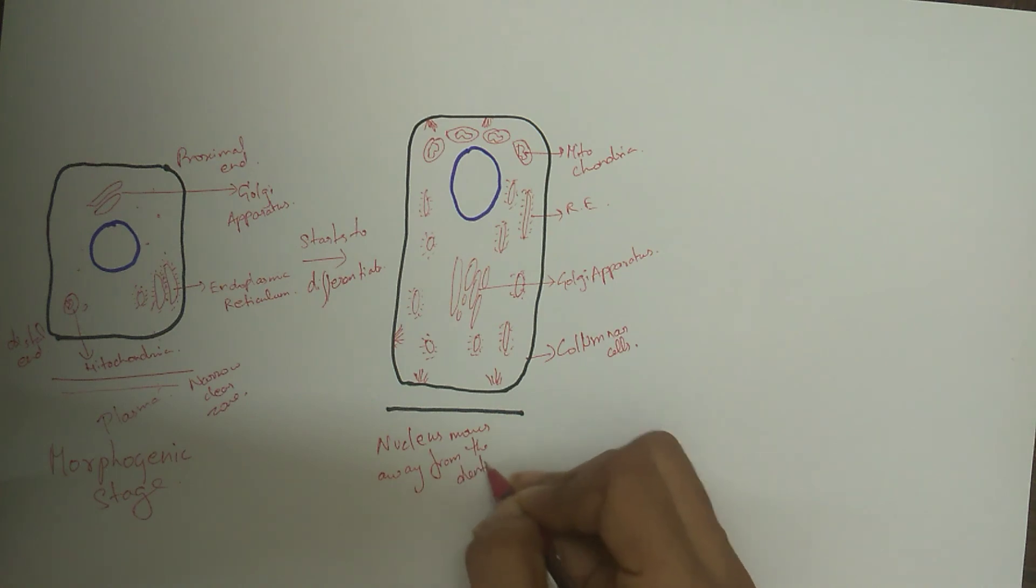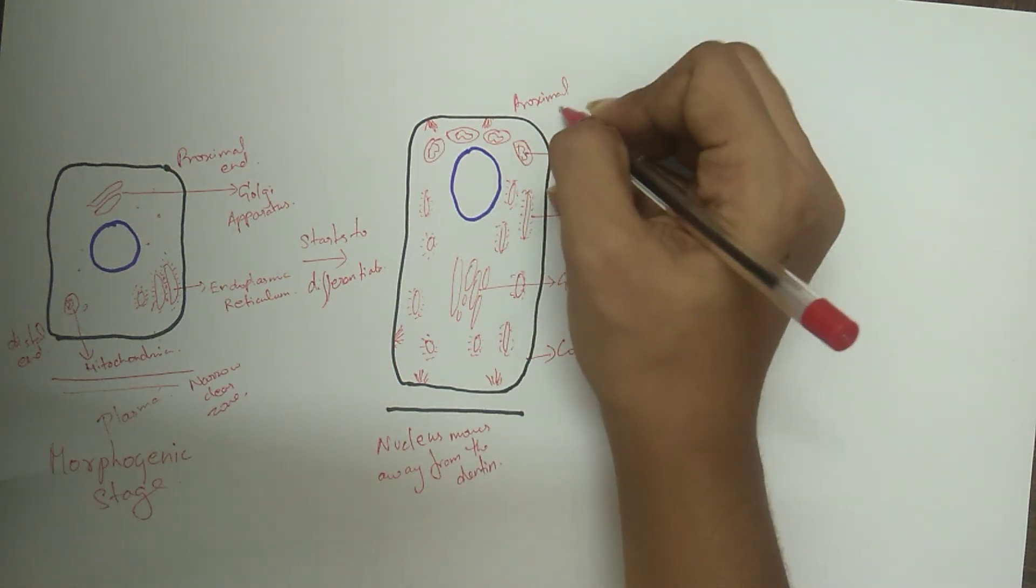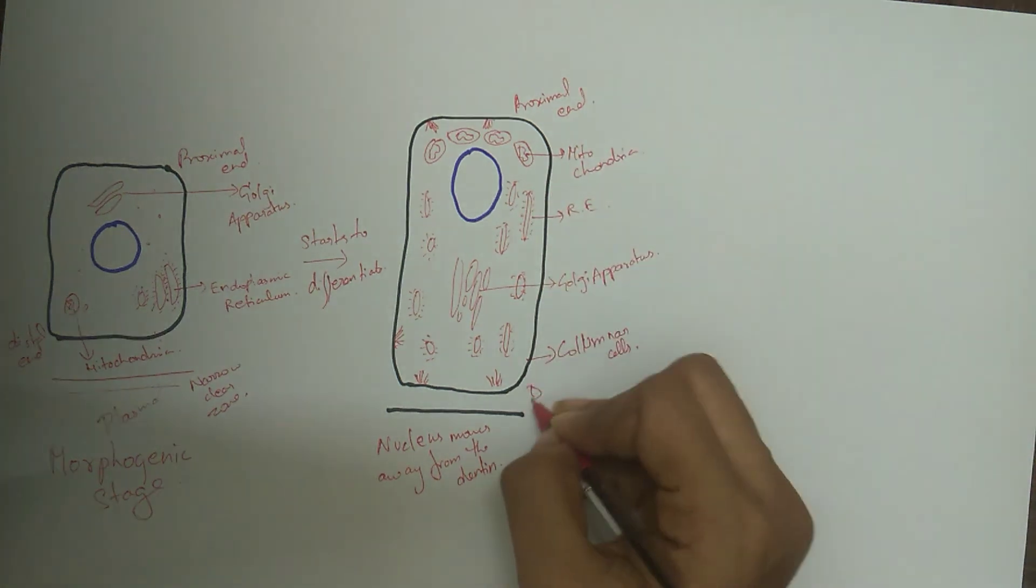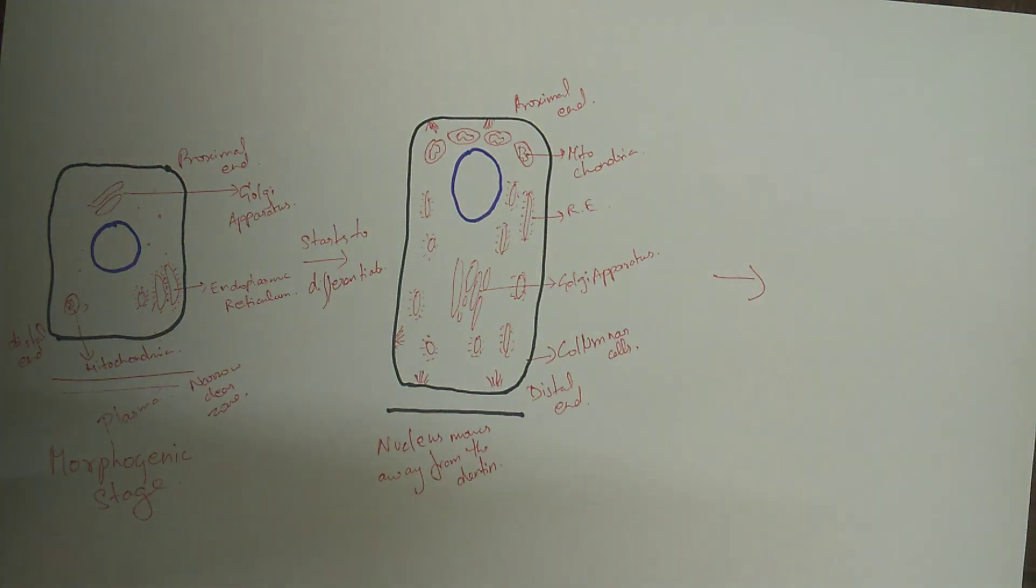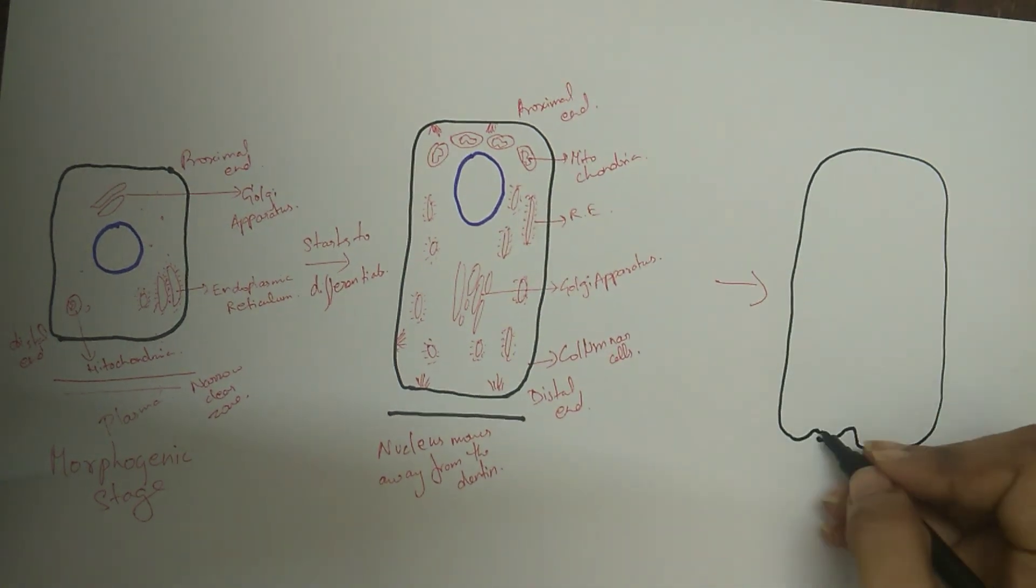They start depending on the capillaries of the dental sac surrounding the outer enamel epithelium for their nutrition, as mentioned earlier in the video of developmental stages of tooth in the belt stage. For clear explanation, just check the link of the video in the description.